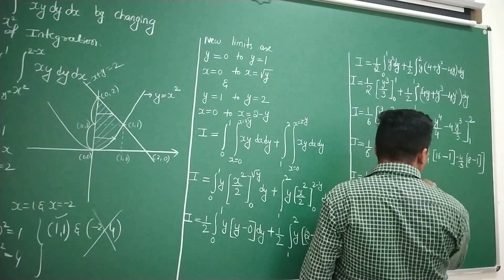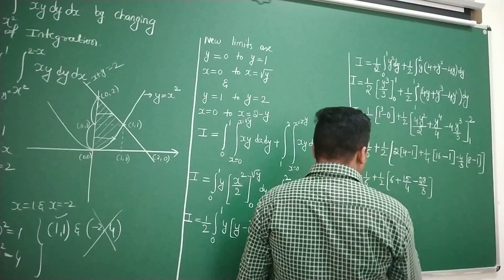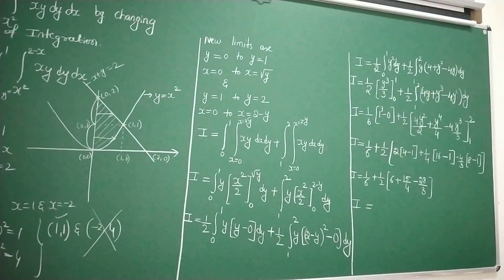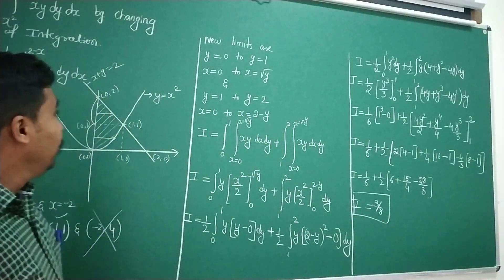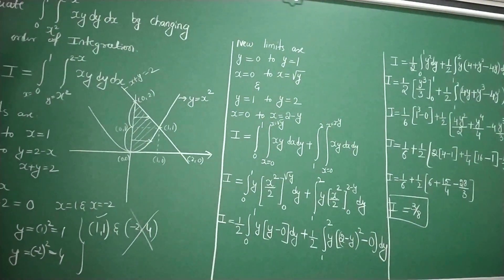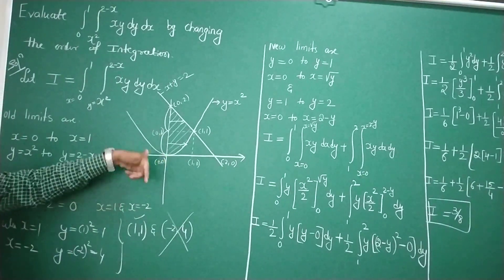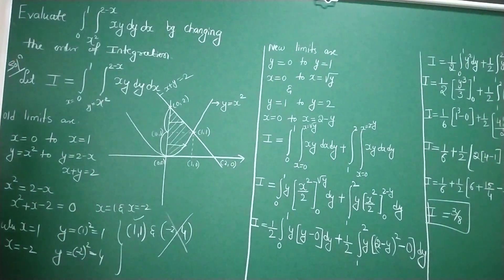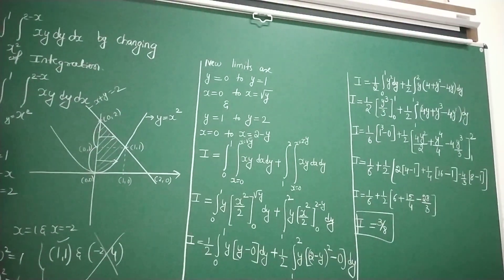Simplifying by taking LCM, the final answer is 3 by 8. This is the value of the given integral. As I mentioned, the region identification and finding the limits are the most important tasks. Go through once from the beginning, and if you have any doubts or queries, please put them in the comment box. Thank you.